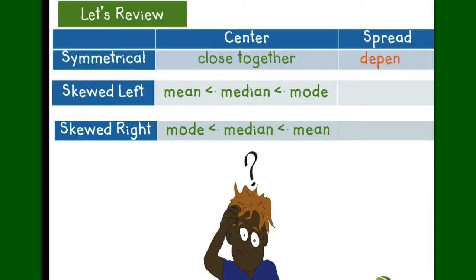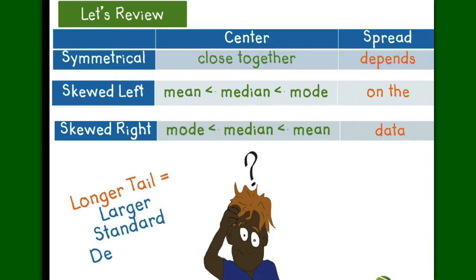A graph spread depends on the data that you are working with. When a graph is skewed, the longer the tail, the larger standard deviation and range will be.